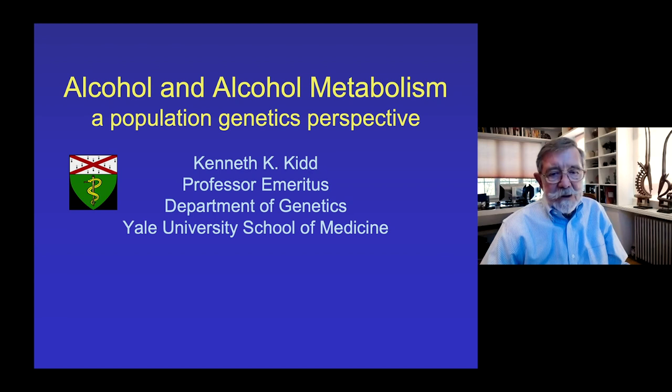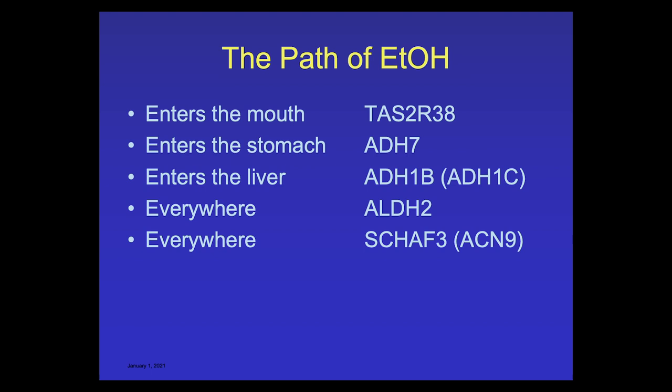What's the path of ethanol in a human? First, it enters the mouth, and there are genes controlling that. It enters the stomach, and there's a gene that functions to metabolize there. It enters the liver, and there are two genes that function there. And then everywhere in the circulation and the rest of the body, there's aldehyde dehydrogenase and another enzyme, SDHAF3 — previously ACN9 — that I'll talk about later.